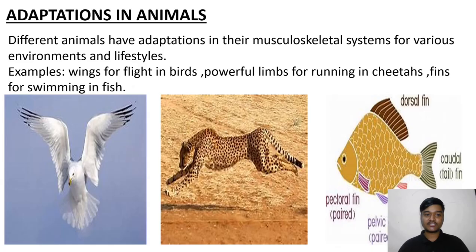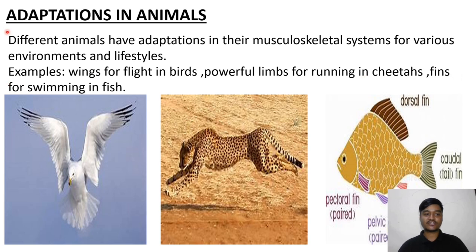Muscles are adapted for various environments and lifestyles. Examples include: wings for flight in birds, powerful limbs for running in cheetahs, and fins for swimming in fish.